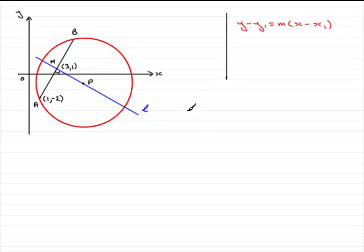So first of all then, what we need is to get the gradient of AM. Remember gradient between two points is the difference in the y coordinates divided by the difference in the x coordinates. So we can do 1 minus minus 2 all divided by 3 minus 1. Work that out and you've got a gradient of 3 over 2, a gradient of 1 and a half.